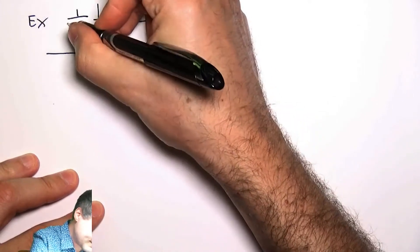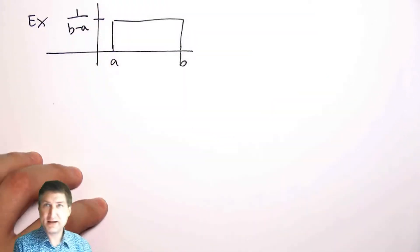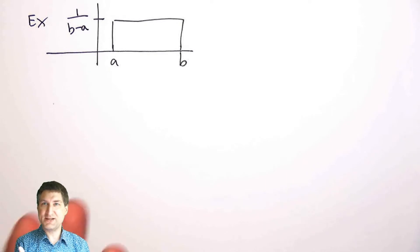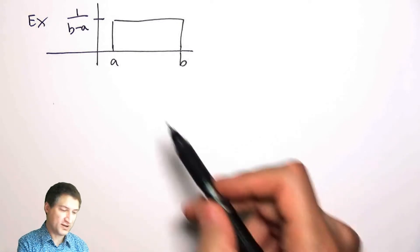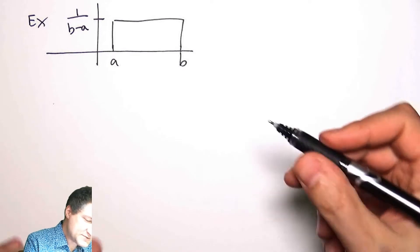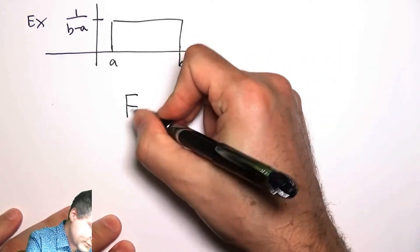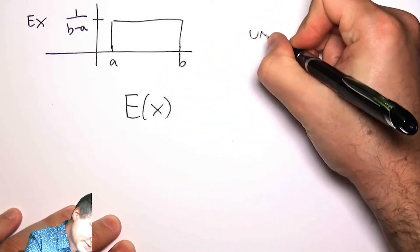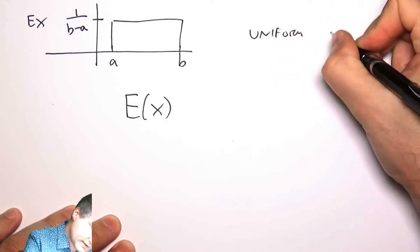So that means that the PDF has to have height 1 over b minus a. I know that that has to be the height because that's, first of all, the definition, and second of all, the integral under this curve has to be equal to 1, right? So what is the expected value of x? And let me just remind us this is a uniform random variable.